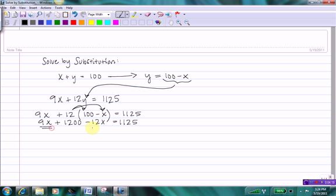Next, I'm going to combine like terms, which gives me negative 3X plus 1200 equals 1125. And we're almost there.